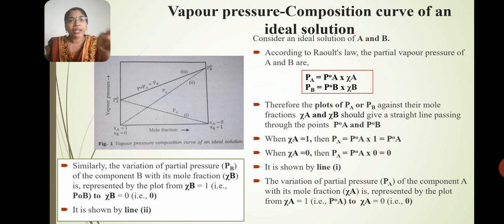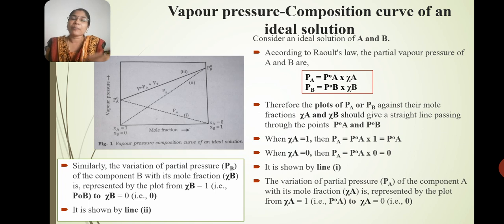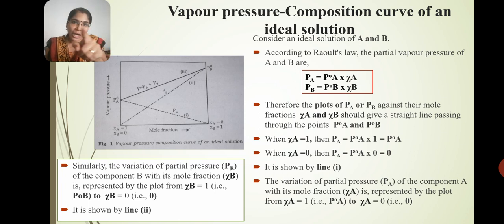When chi-A is equal to 1, P°A is equal to P°A. That means when chi-A is equal to 0, P°A is equal to 0. That means the graph is dotted line 1, which is represented as line 1.